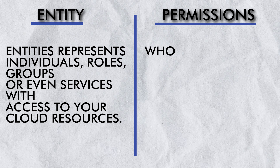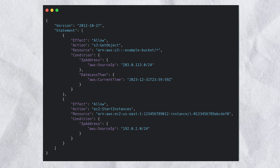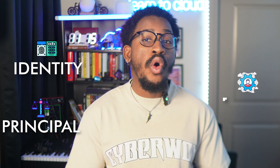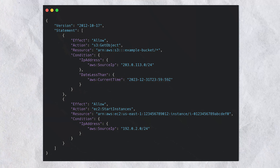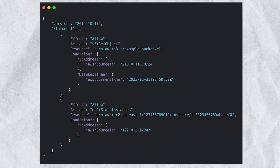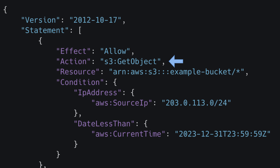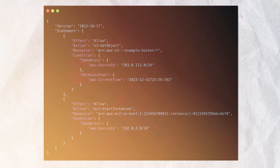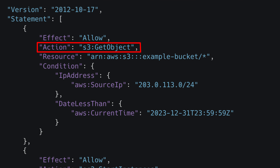Secondly, the permissions define who has access to what, when, and where. Here's an example of what an IAM policy looks like within AWS. Starting with the who — in IAM policies, the who is represented by the identity, principal, or role that the policy applies to. In this case, the who is not explicitly defined in the policy itself; instead, the policy should be attached to a specific IAM user or role within AWS. Next, the what is defined by the actions specified in the policy's action field. In this case, it allows an action related to Amazon Simple Storage Service, also known as Amazon S3 — specifically the S3 GetObject action, which means the actions allow for the retrieval of objects in an S3 bucket within AWS.